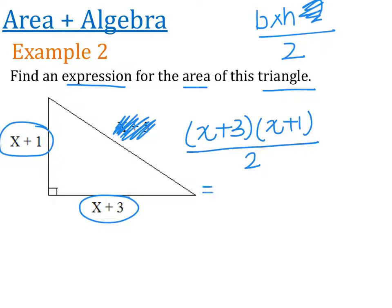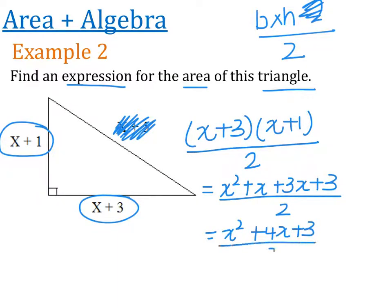So let's go ahead and start that. So we can expand the brackets at the top. So we end up with x squared plus x plus 3x plus 3, and the whole thing is divided by 2. So I end up with x squared plus 4x plus 3, and again the whole thing is divided by 2. Now that is an absolutely acceptable answer.